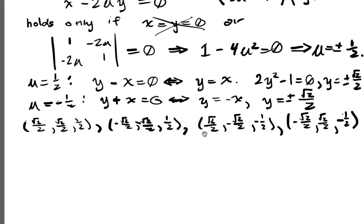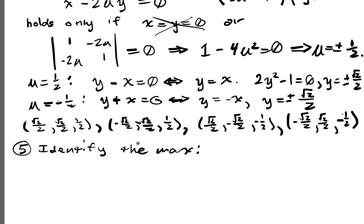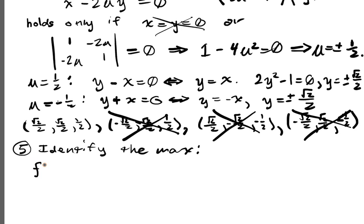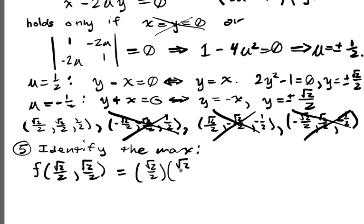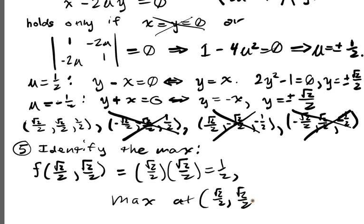Those are all the critical points. Now we identify the maximum, step 5. We can automatically cancel out the points where x or y is negative, because x and y both have to be greater than or equal to 0. So we can exclude those immediately. The maximum is at (√2/2, √2/2), which gives √2/2 × √2/2 = 1/2. That's the only maximum we get.